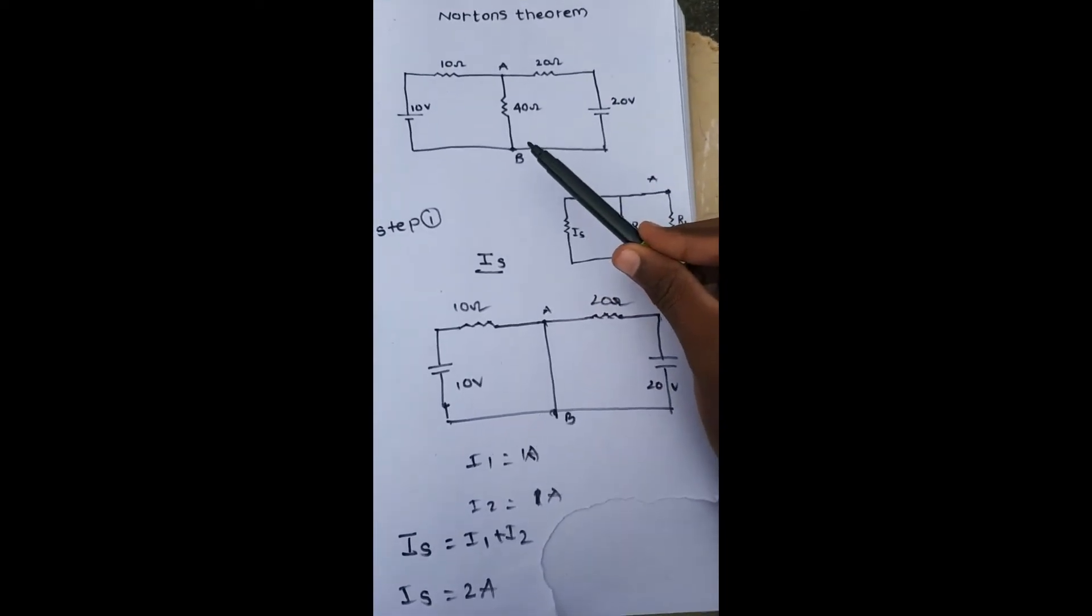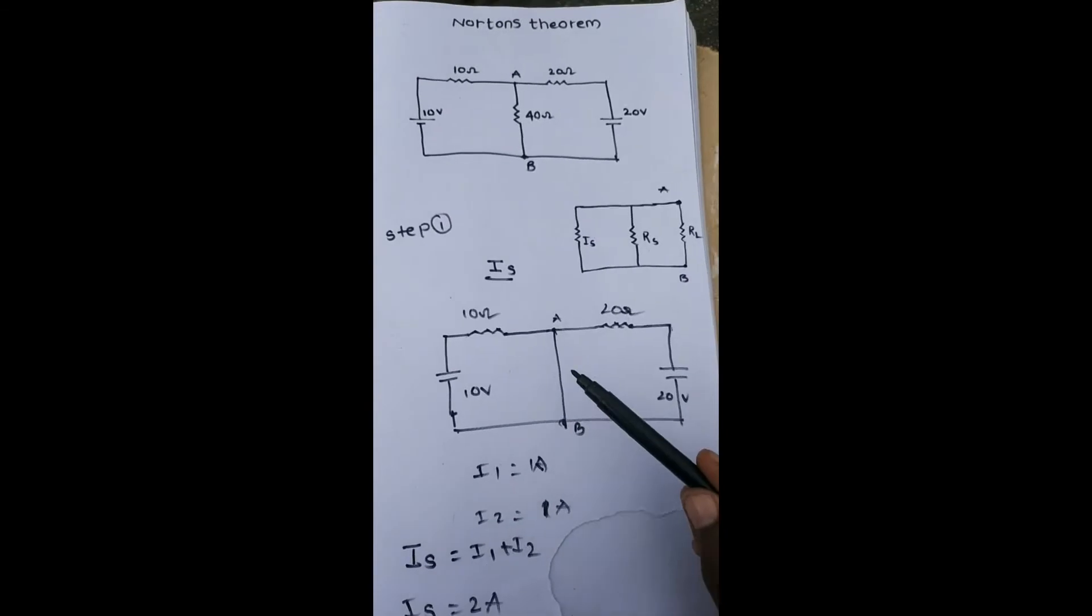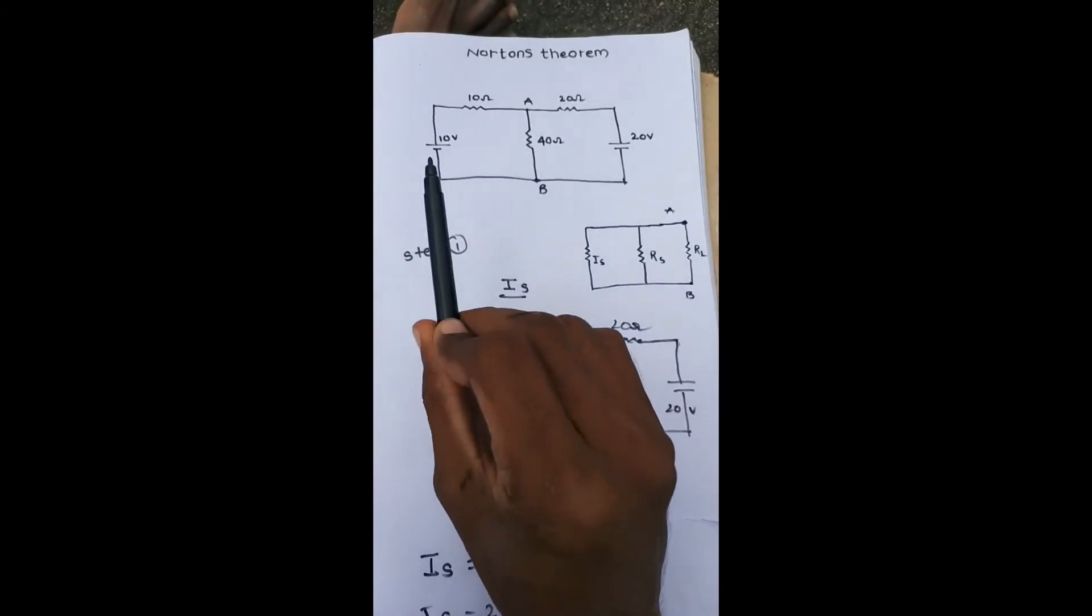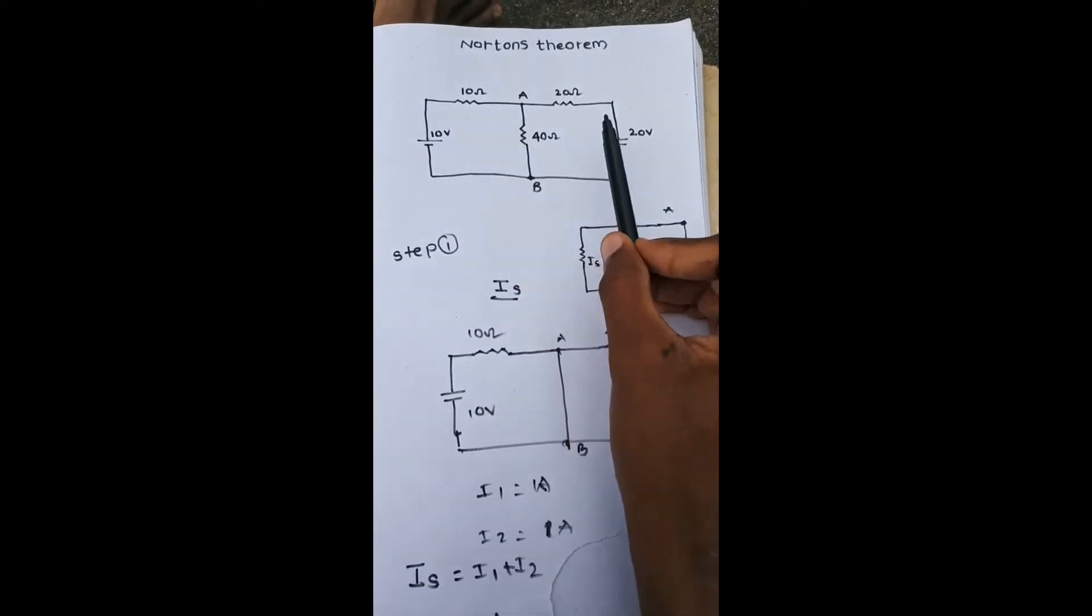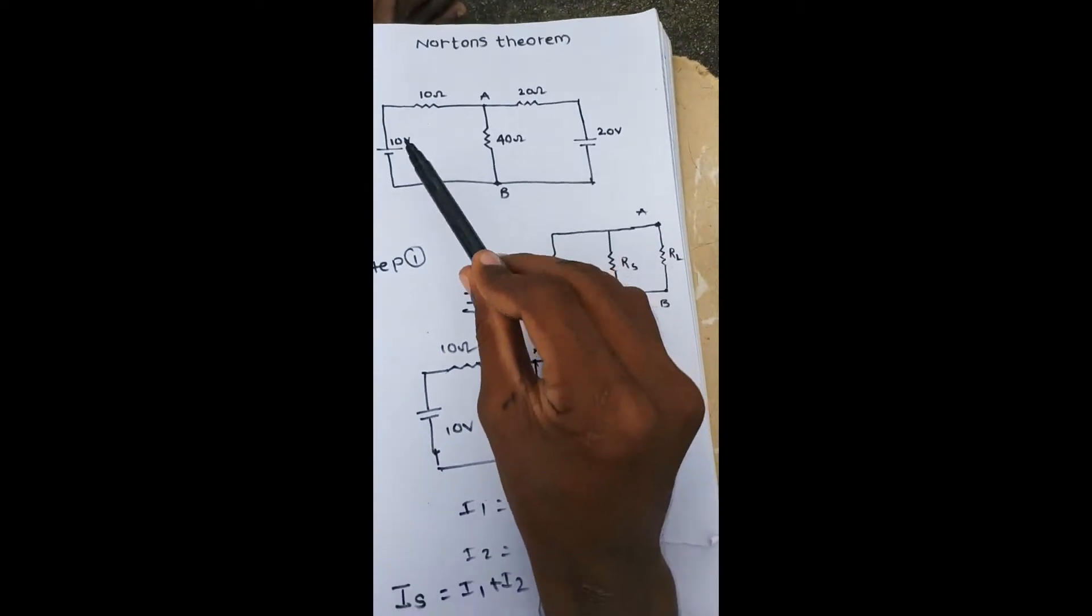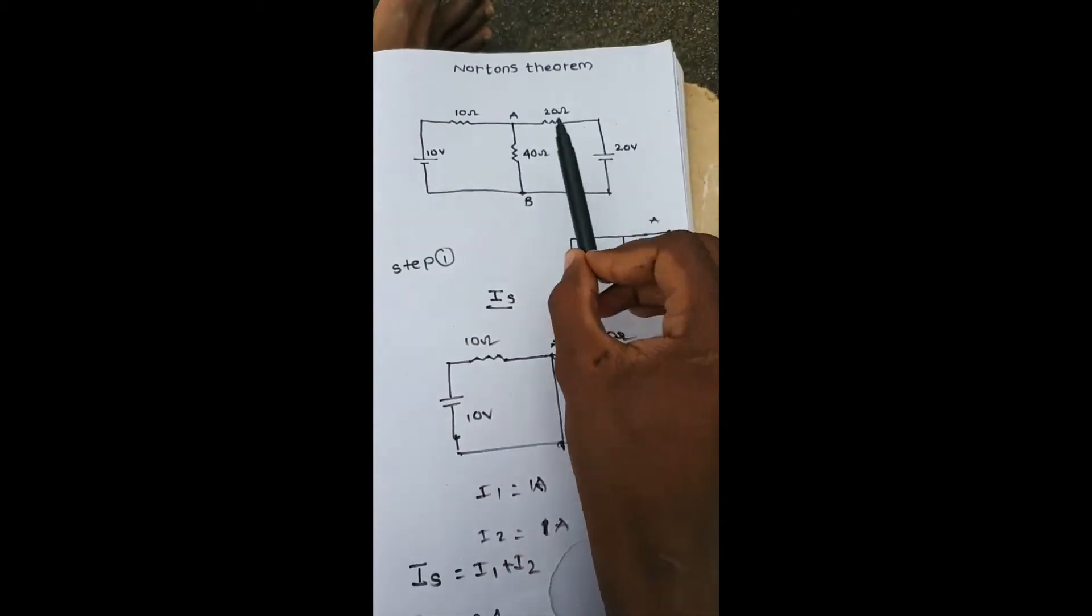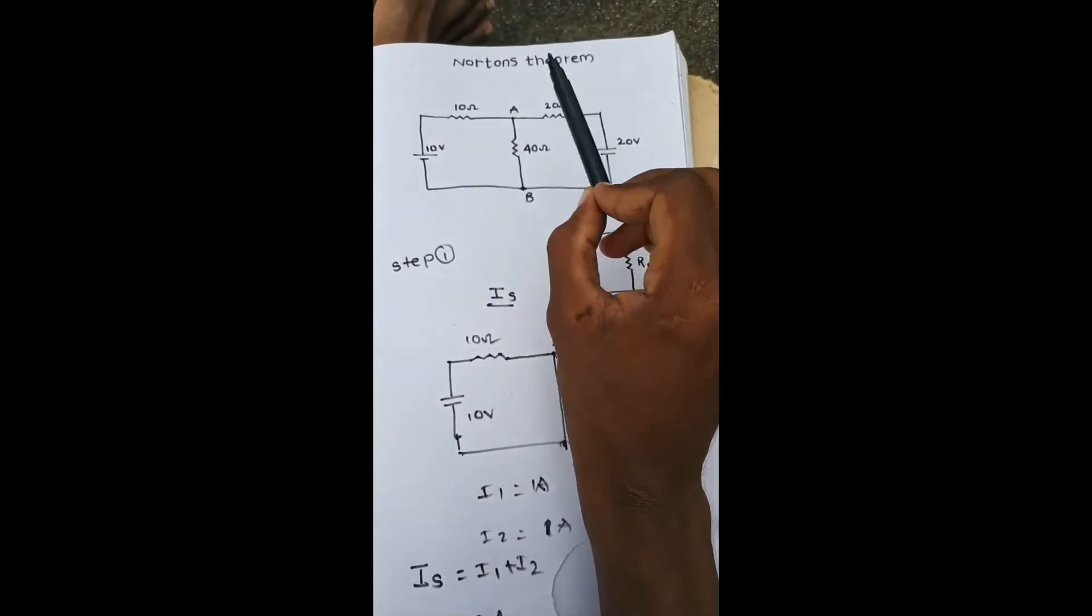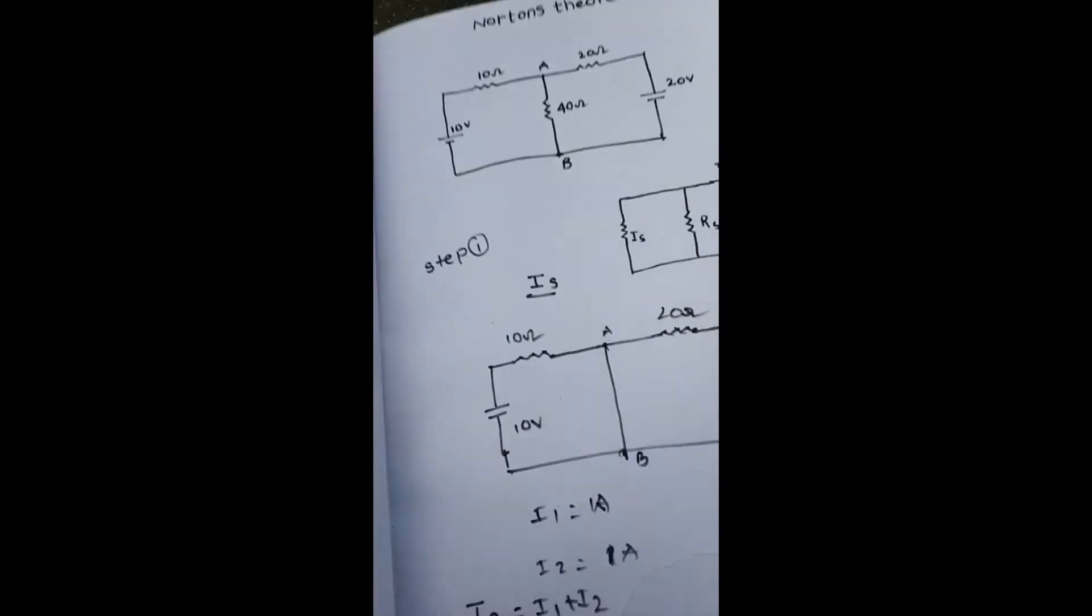For Rs value, if 40 ohms, that means RL value, is eliminated or removed - not short circuit but removed - and 10 volts and 20 volts are short-circuited, then the redrawn circuit has 10 ohms and 20 ohms. These two resistors are in parallel.